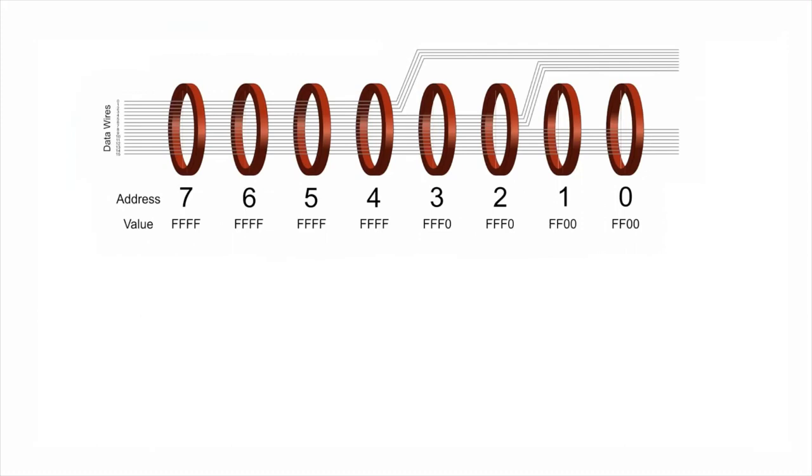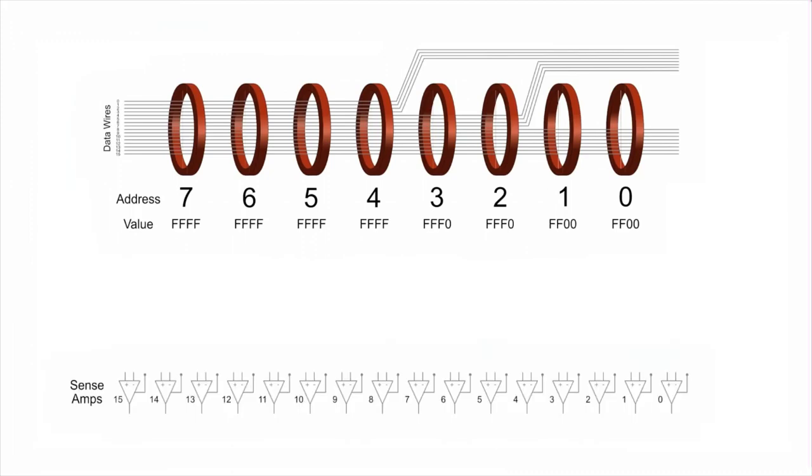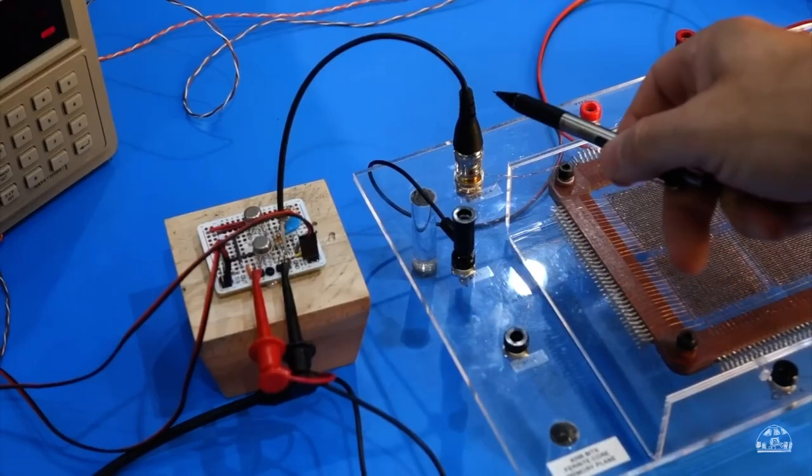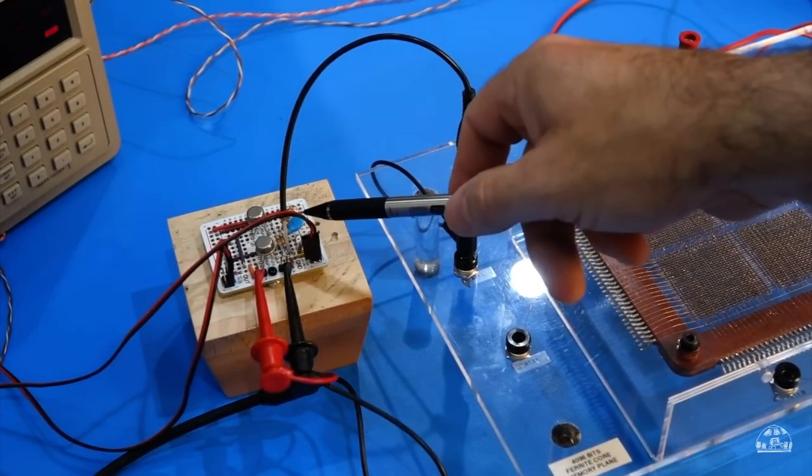Obviously we need a way to detect if a wire goes through a core or not, so we connect the two ends of each data wire to a sense amplifier. The sense amplifier is a very sensitive wire current detector. We demonstrated such a circuit in our previous videos.